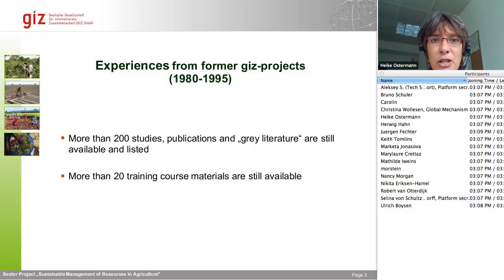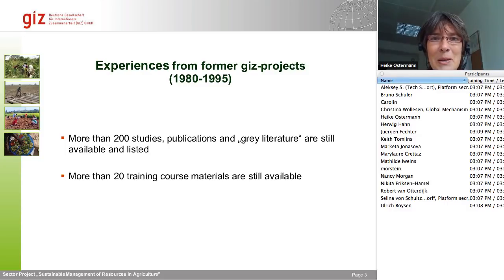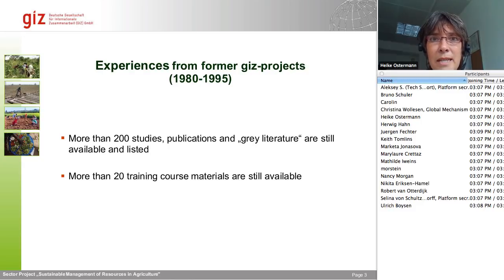Coming now to our experiences from former GIS projects which ran between 1980 and 1995 — this was more or less the end of the post-harvest loss projects — we found that we still have more than 200 studies and publications and great literature which is still available. If there's any interest in having this list, please contact us. We also have still more than 20 training courses where the material is still available and we are going to evaluate that as well.